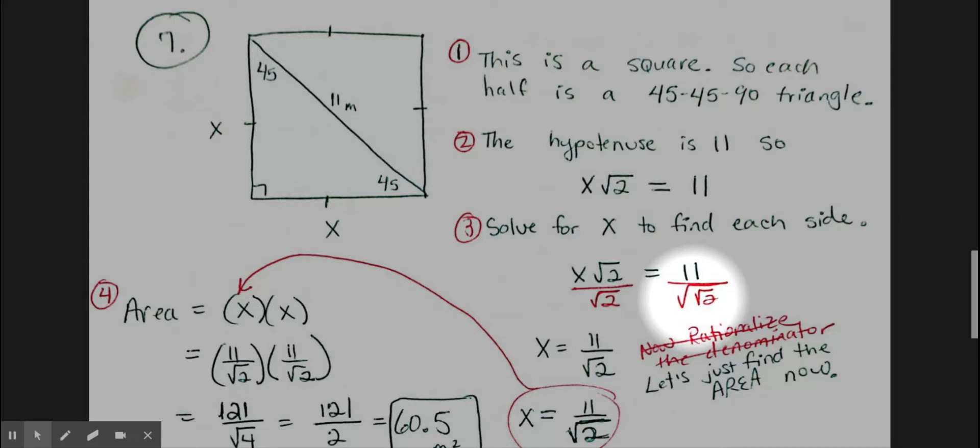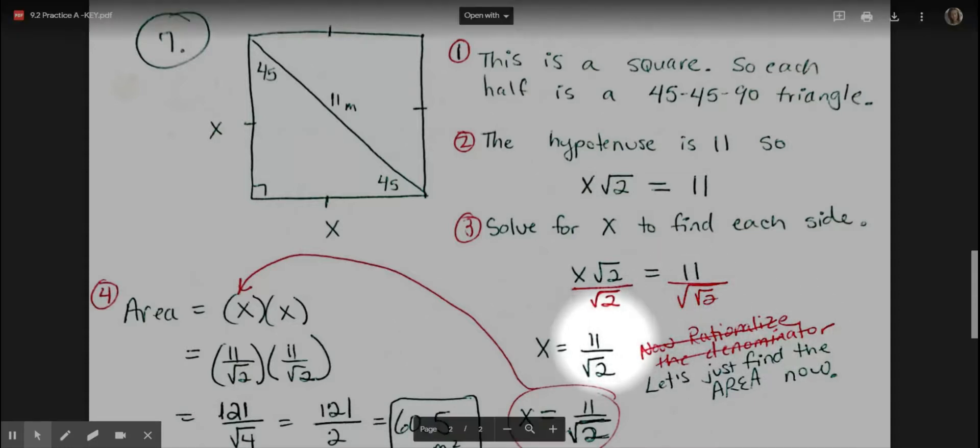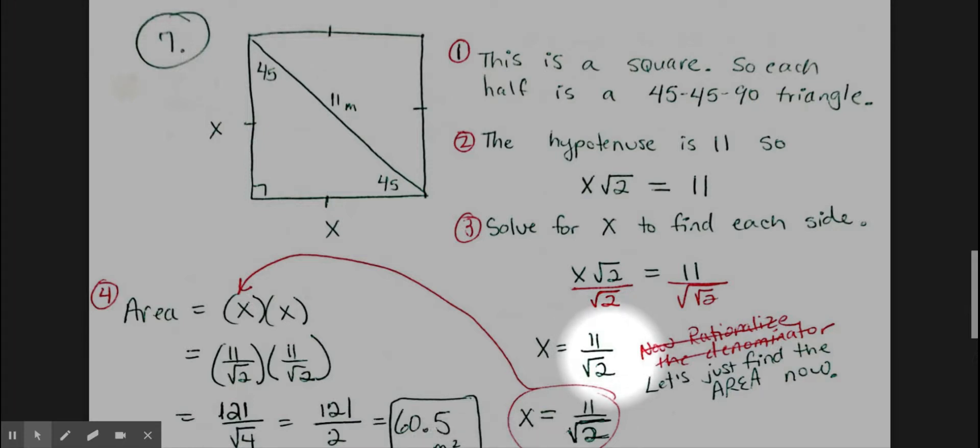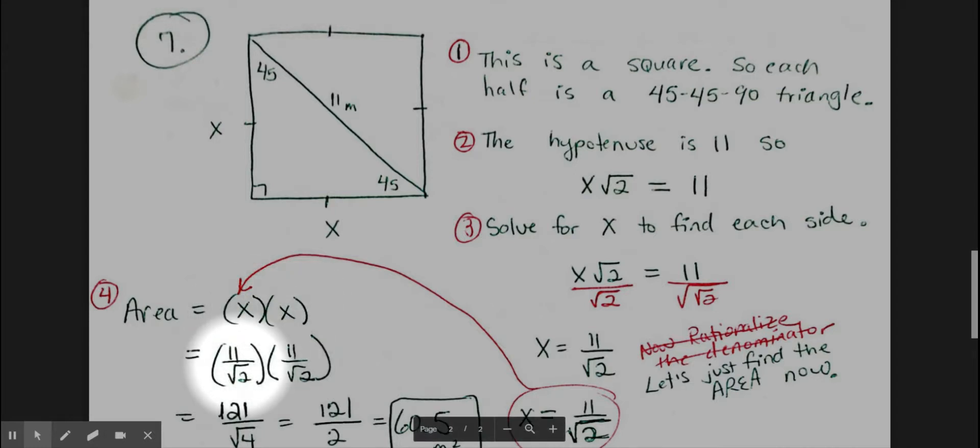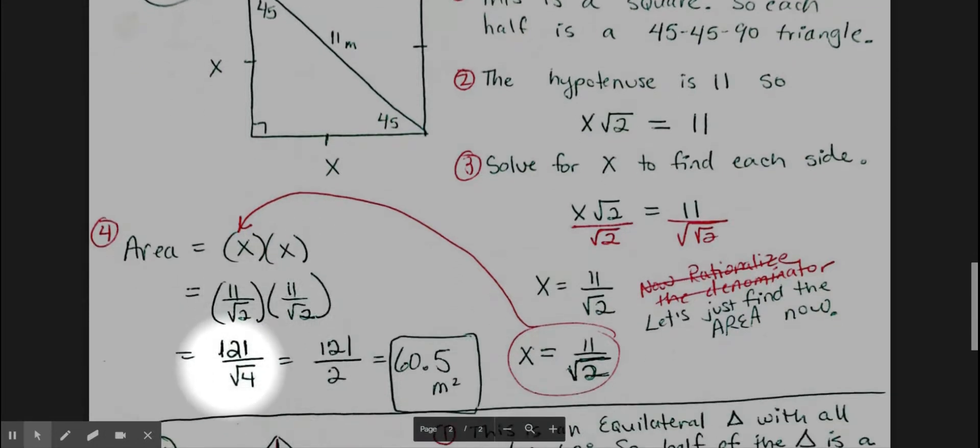But then I realized I'm not even at the final solution here. I don't even care what x equals itself—we're just trying to find the area of the square. So rather than rationalizing the denominator, let's just take this 11 divided by radical 2 that x is equal to and plug it into the area formula for a square. Area is side times side, so x times x. 11 over radical 2 times itself, which is really 121 on top and square root of 4 on the bottom, because when you do radical times radical, you can multiply together the two factors under the radical. Then take the square root of 4 on the bottom of the fraction and you get 2.